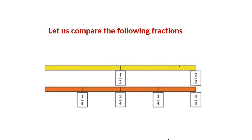Now let us compare the following fractions. Look at the two strips of the figure. They have equal length, but the first one is divided into two equal parts and the second one is divided into four equal parts. In the first yellow strip, the first part is equal to half, and if we consider both parts together we can say this is 2 by 2. For the second strip, if we consider the first part we can write it as 1 by 4. If we consider two parts, then 2 by 4. If we consider three parts together, then 3 by 4. If we consider all four parts together, then 4 by 4.